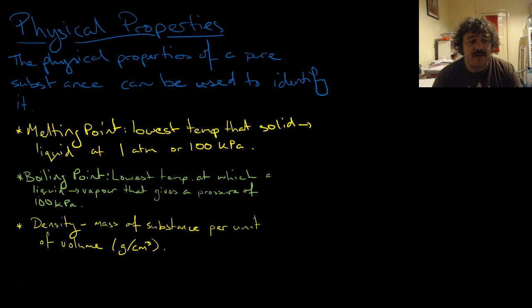Density is the mass of substance per unit, so divided by unit of volume. And we measure this in grams per centimeters cubed. Not milliliters, not liters, centimeters cubed. Grams per centimeters cubed.